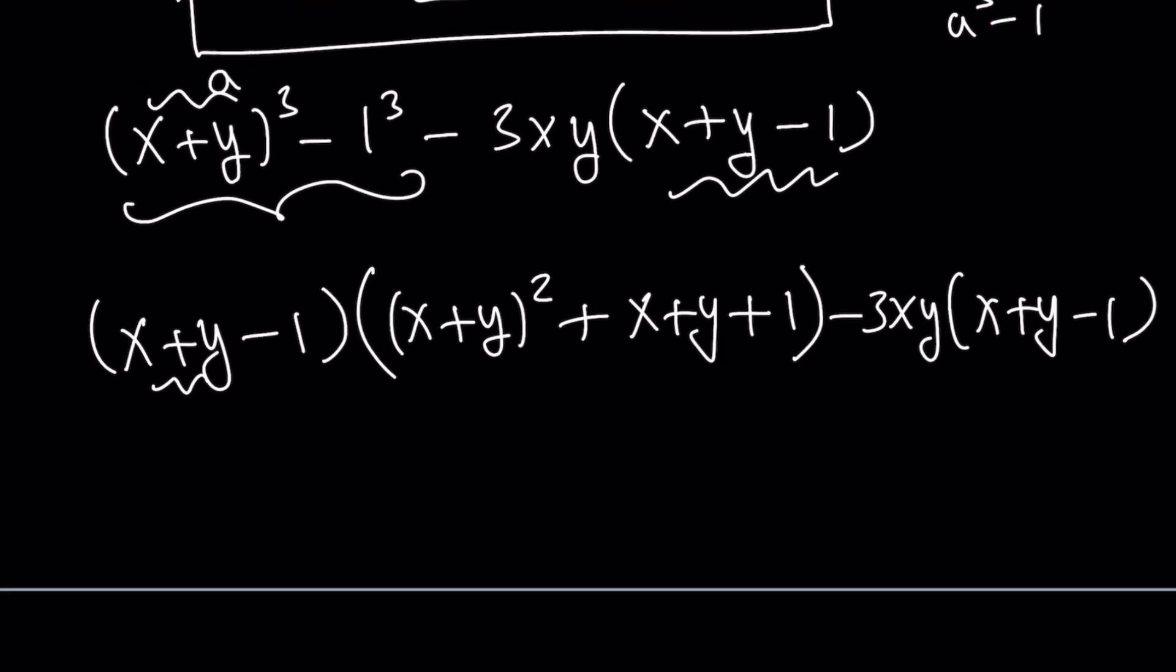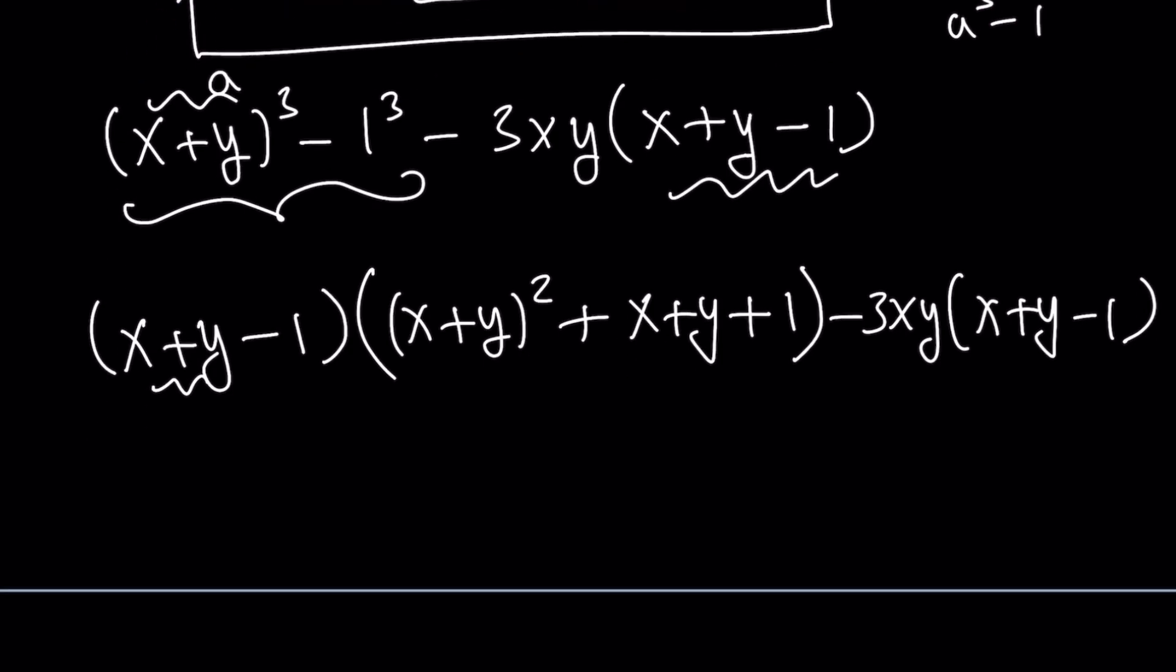After doing the grouping, we get another common factor. That's the idea behind factoring by grouping. Now you have a common factor, so we can take it out.